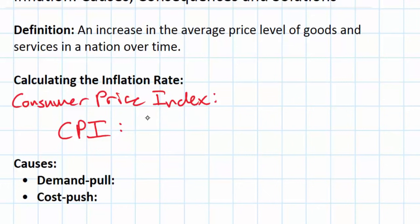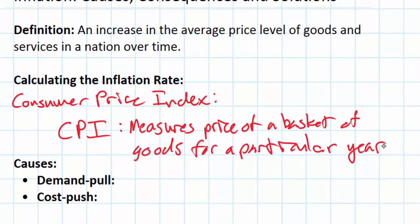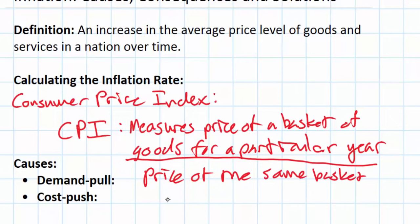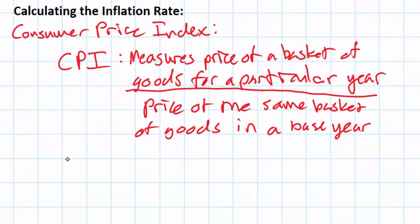The CPI can be measured for a particular year. To find inflation, the CPI measures the price of a basket of goods for a particular year and divides by the price of the same basket in a base year. What we end up with is an index representing whether prices have increased or decreased from a base year.